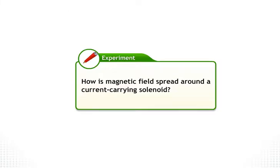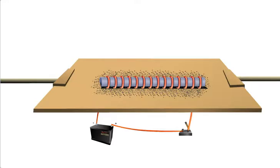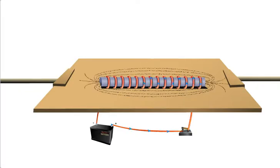To analyze the magnetic field and field lines due to a current carrying solenoid, here is an experiment. In this experiment, we fix a solenoid in a slit in a cardboard. We connect this solenoid to a battery and a key. Finally, we sprinkle iron filings on the cardboard and close the key to complete the circuit. When current passes through the solenoid, the iron filings arrange themselves in a pattern that represents the magnetic field lines due to the solenoid. These lines can be traced using compass needles.